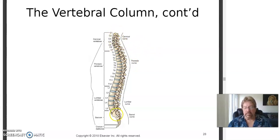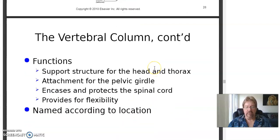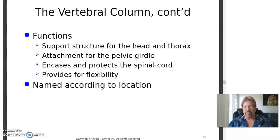When these stack on top of each other, they form a tunnel right down through here and the spinal cord goes down through there, so it's surrounded by bone. Also between most of the vertebrae there are intervertebral discs. You've heard of those, people talk about a slipped disc or rupturing a disc. There's disc between all the vertebra except C1 and C2 and C1 and the occipital bone of the skull. Vertebral column functions: supports structure for the head and thorax, attachment for the pelvic girdle, encases and protects the spinal cord, provides for flexibility, named according to location.